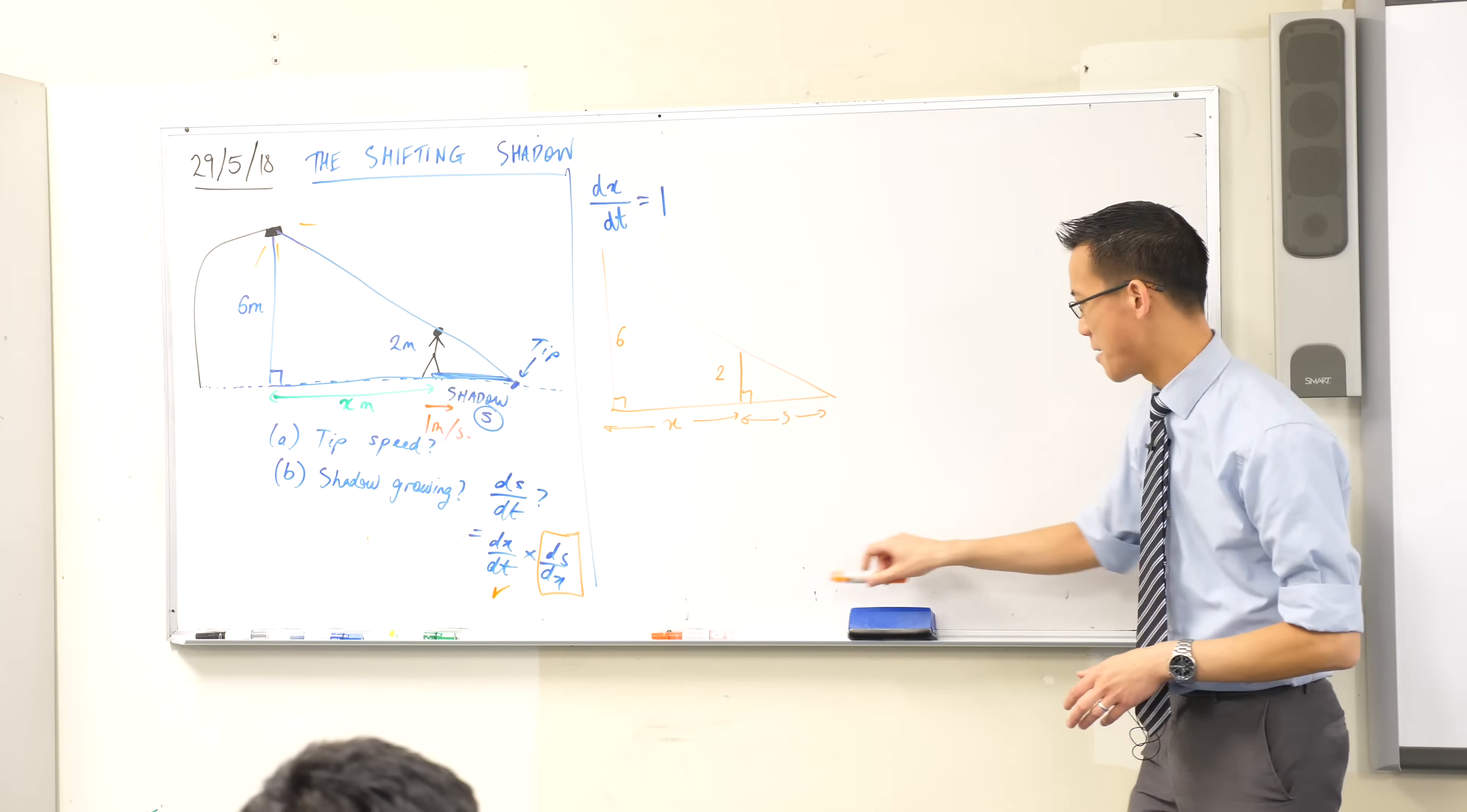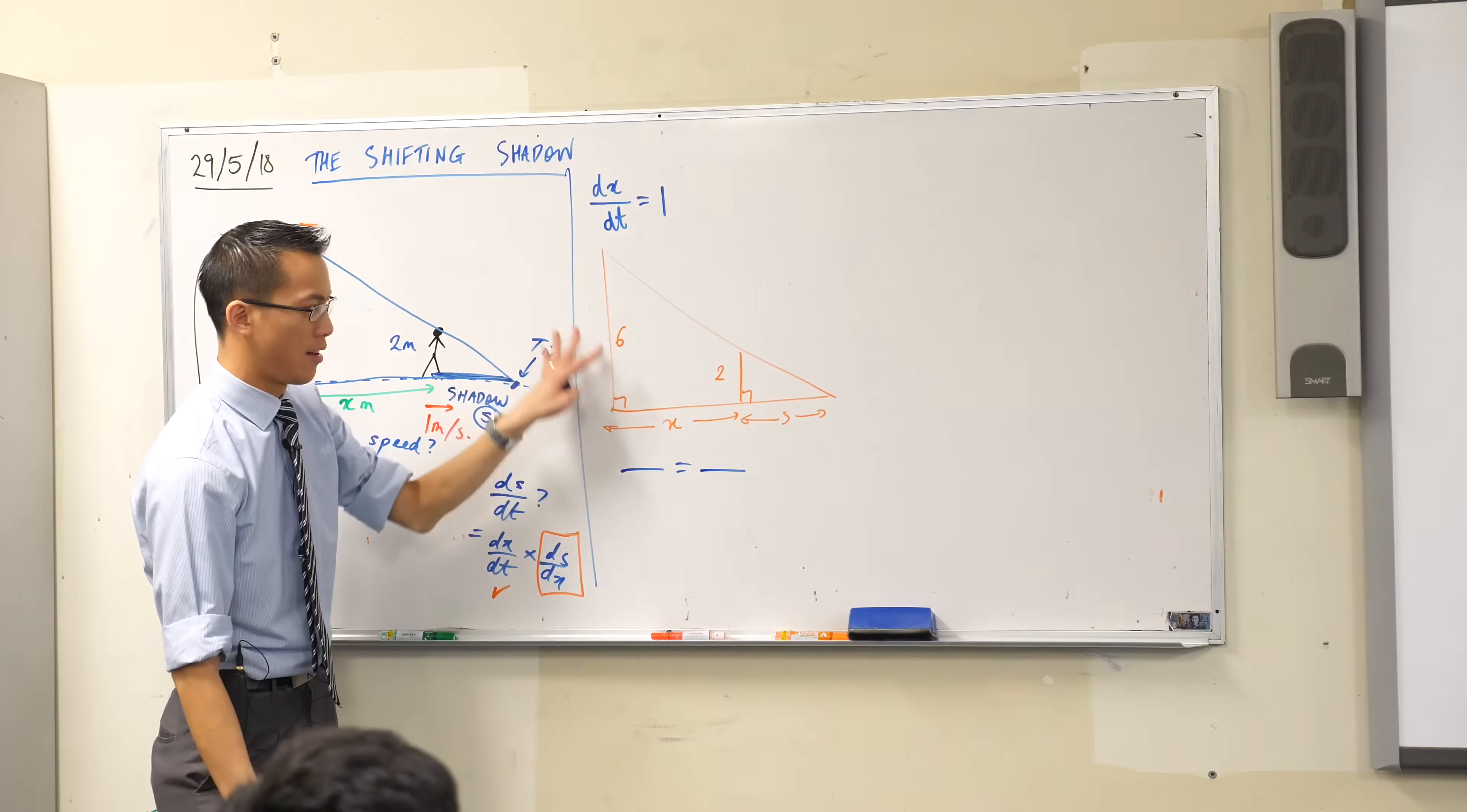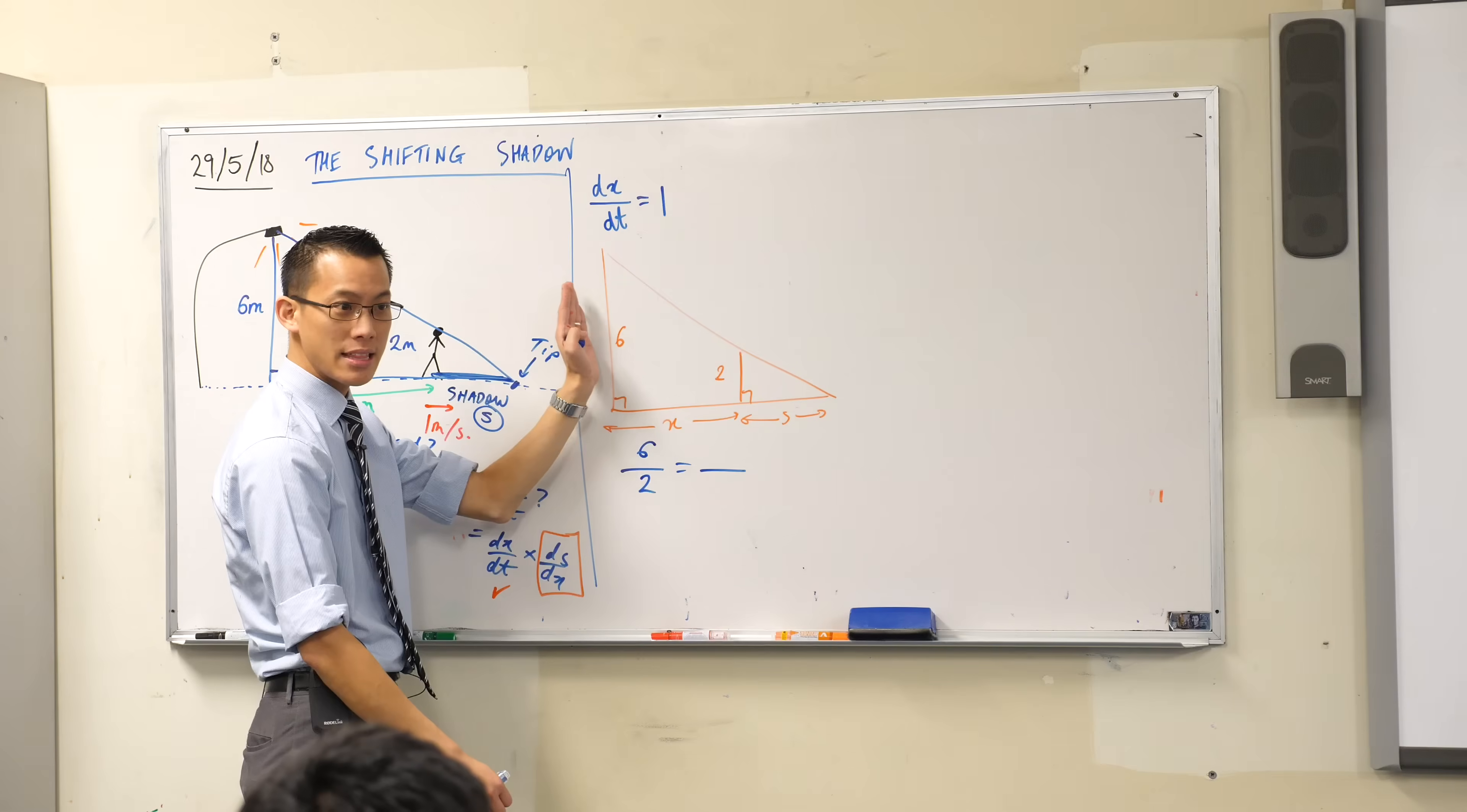What piece of geometry is going to help me with that? It's going to be similar triangles, right? This question is not about similar triangles so I'm not going to labor the proof. Can you see what relationship - something over something equals something else over something else - what's going to capture the geometry here and put s and x in the same equation? I could say 6 over 2, that's a big side compared to a little side, big triangle, little triangle. So what's the corresponding length in this same big triangle?